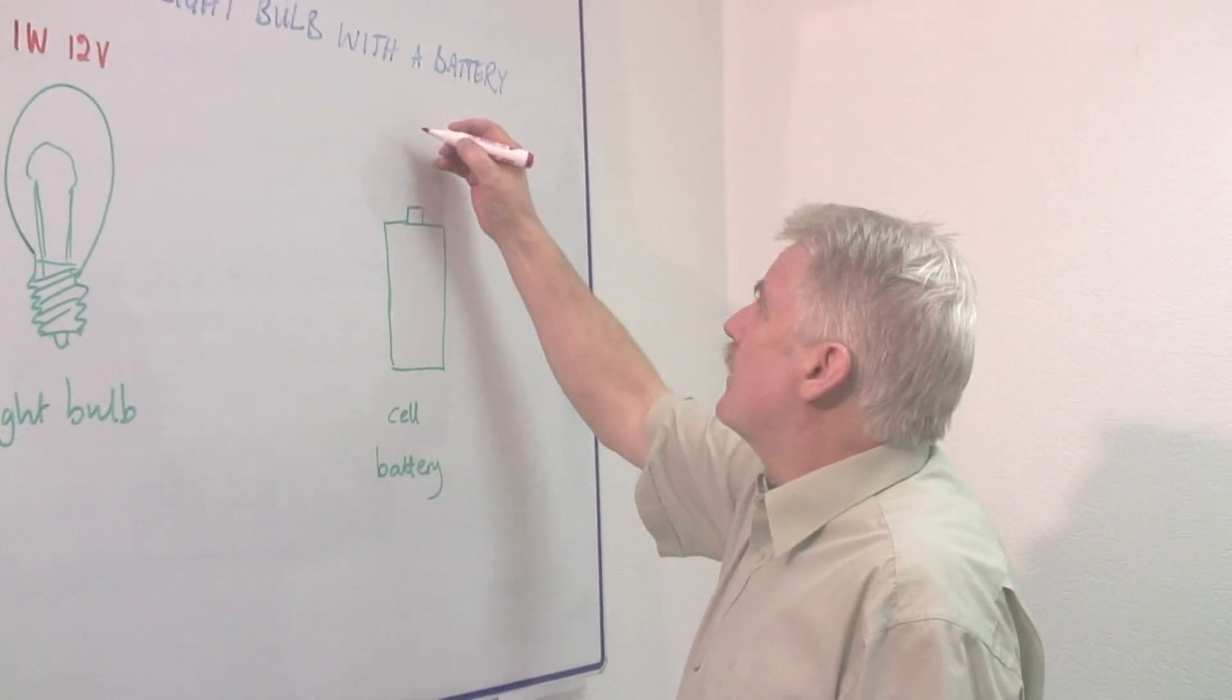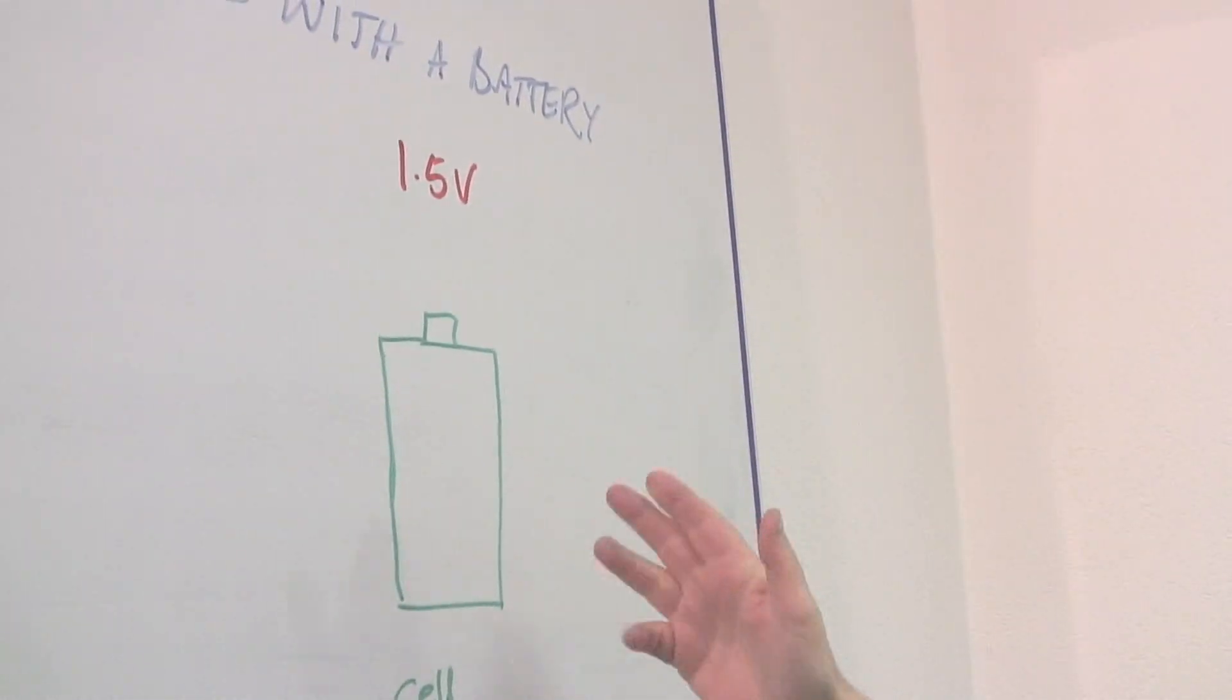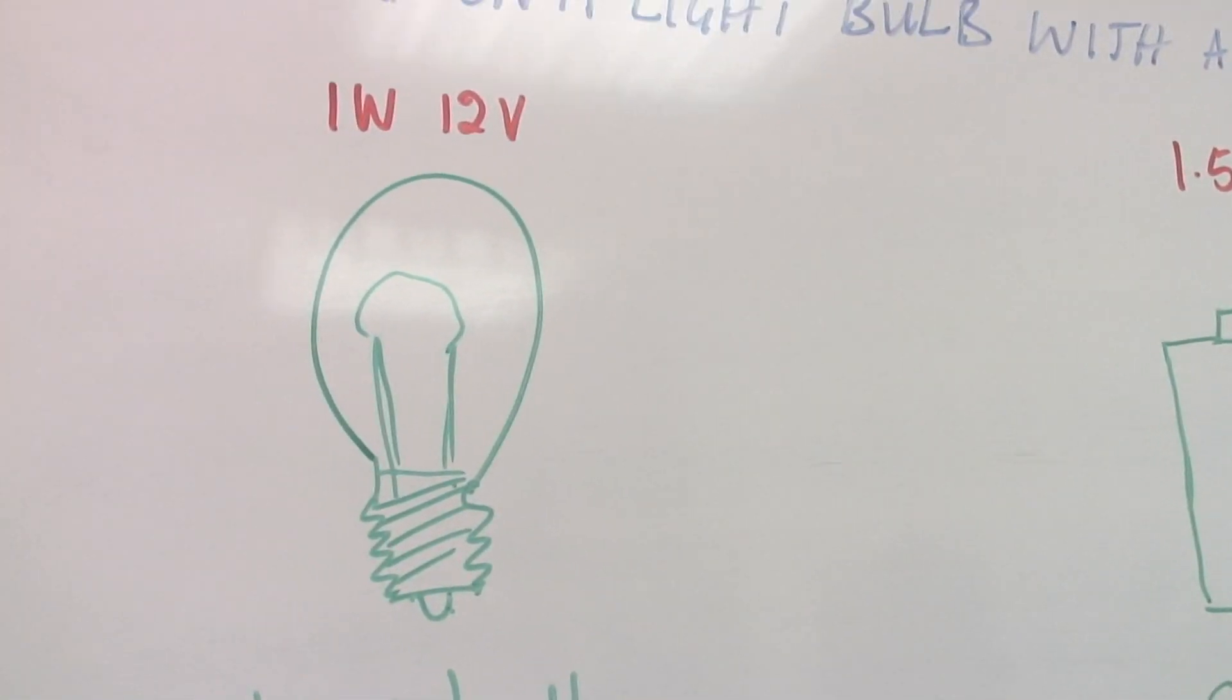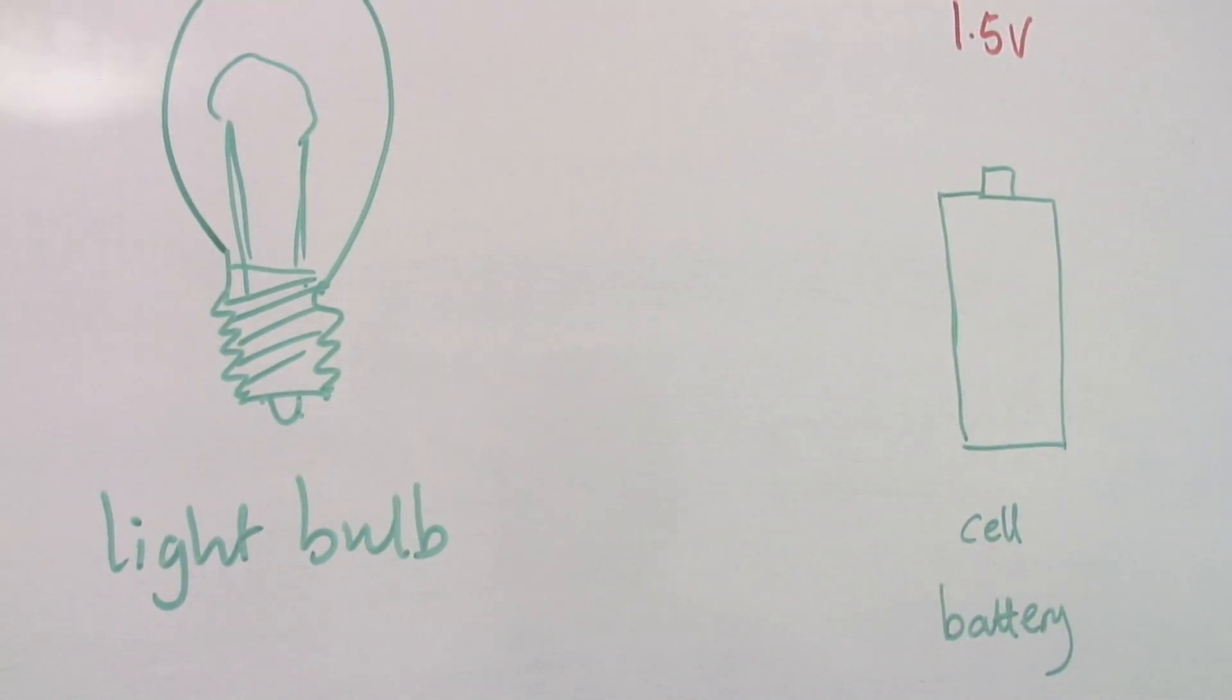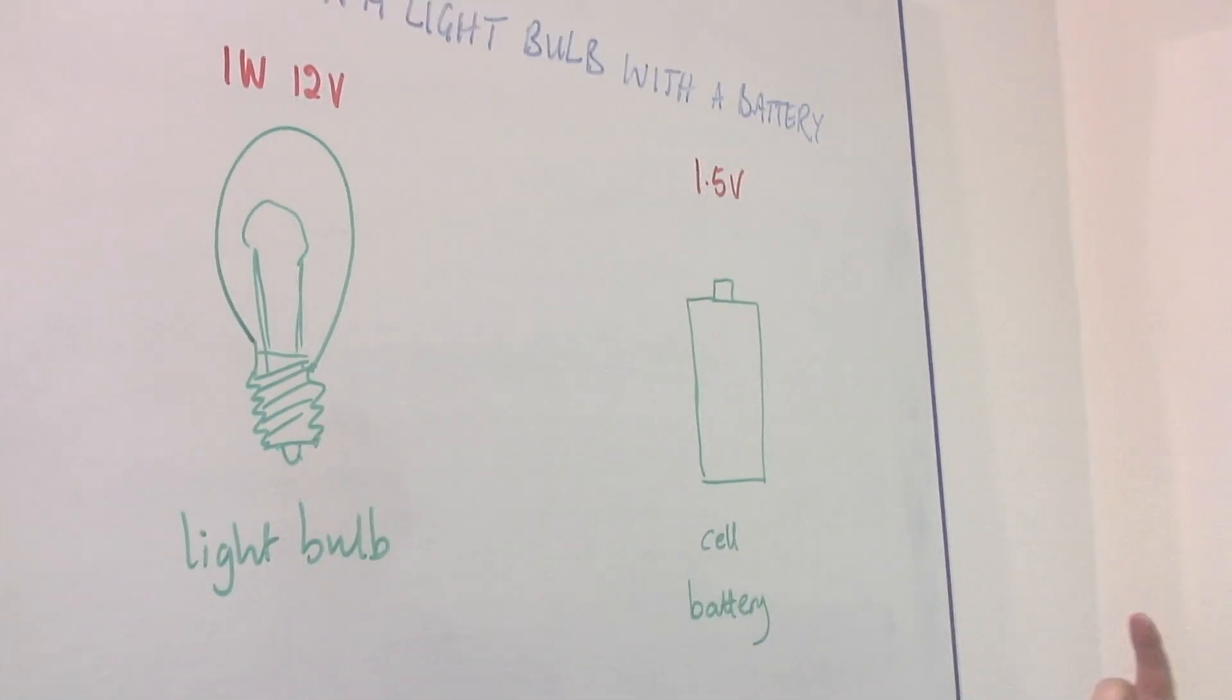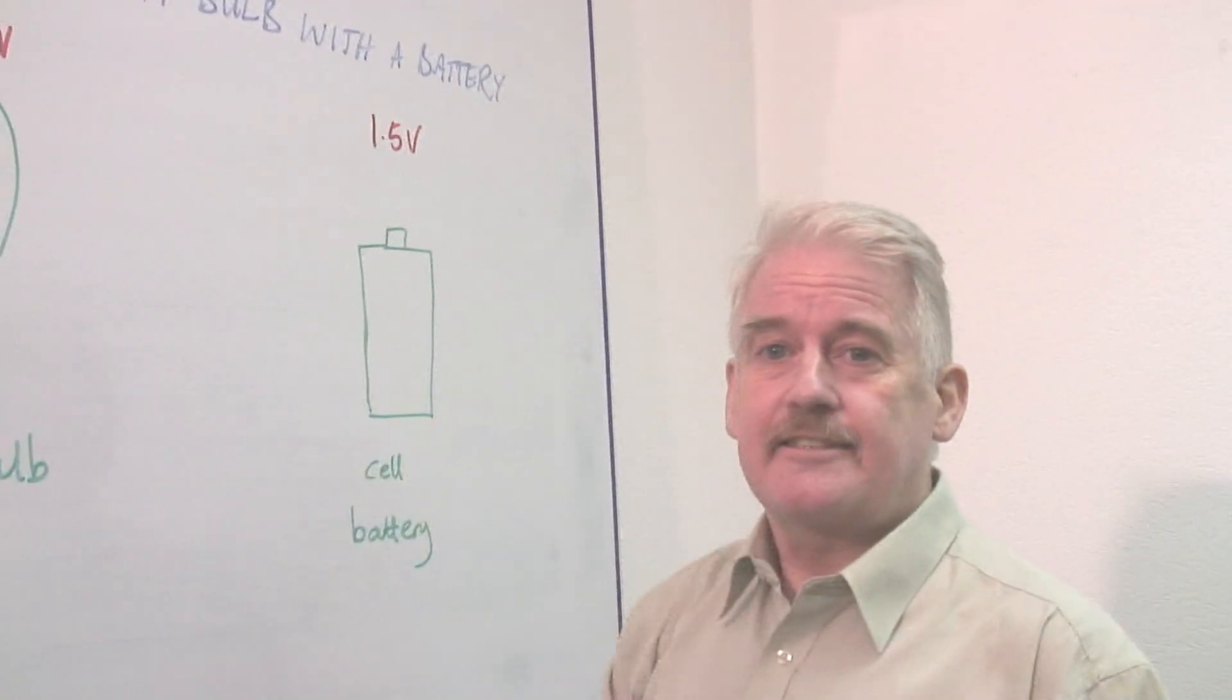If I have a one point five volt cell like this, well this will not drive that. I can put the two together and what will happen is this will glow maybe a little bit but it won't act as a light bulb.